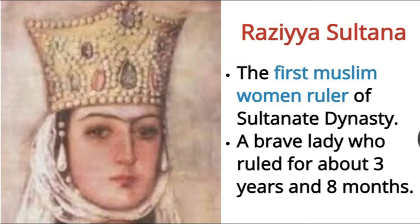Ilthutmish nominated his daughter Razia Sultana as his successor. She was the first Muslim woman ruler of the Sultanate dynasty. She was a brave, intelligent lady who dressed like a man, rode horses, and led the armies into battle. But the Turk Zadas did not like to be ruled by a woman and so they removed her from the throne.